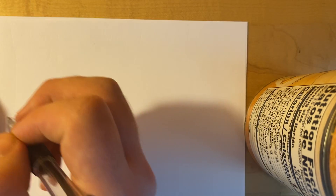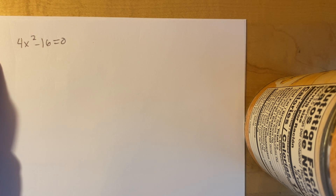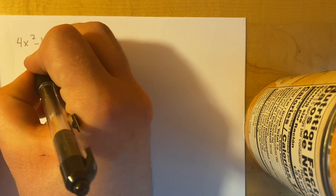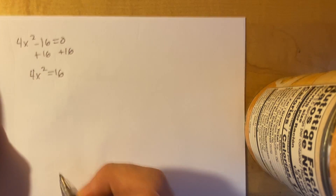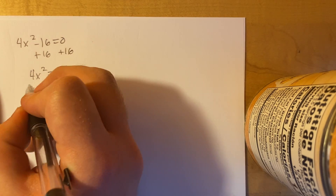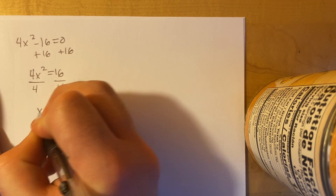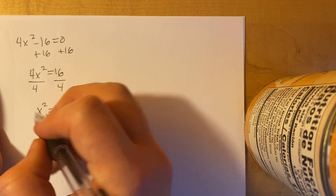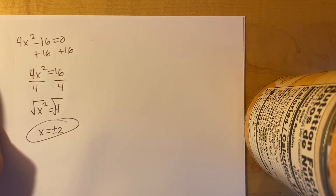We're going to do four of the example problems from your paper. The first one is 4x squared minus 16 equals 0 — we're going to up the difficulty a little bit. Add 16 to both sides to get 4x squared equals 16. We have a coefficient in front of x, which is multiplication, so to undo that we divide by 4 on both sides. These cross out and we're left with x squared equals 4. We know 4 is a perfect square, so square rooting both sides gives x equals plus or minus 2.